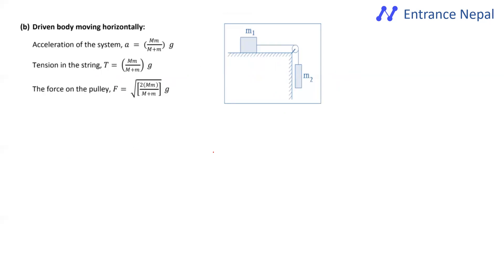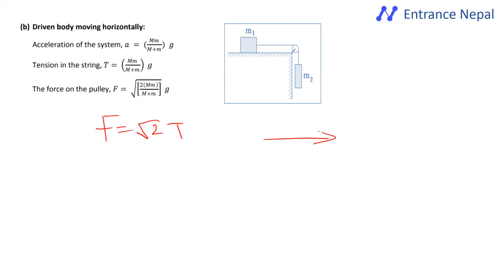For a body on a horizontal surface connected via a pulley, you find the acceleration of the system and the tension in the string. The net resultant force when two tensions act at 90° to each other equals √2 times the tension.